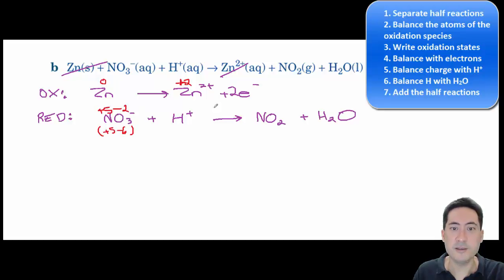We've got plus five there, and that's minus two again. That's just two of those, so that's a total of minus four. There's no charge, so you need a plus four. That agrees. It's gone from plus five to plus four, so that's reduced. If you don't know how to do that, go back to the main video.